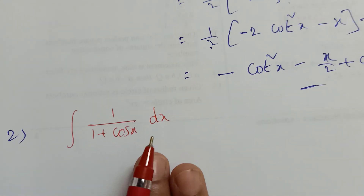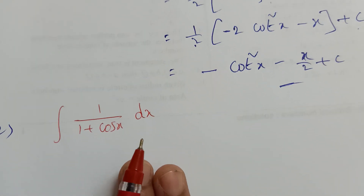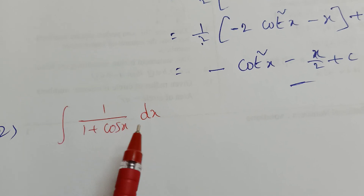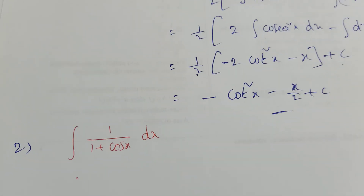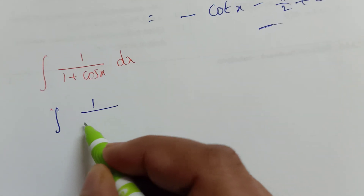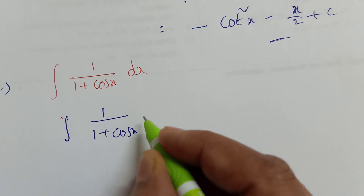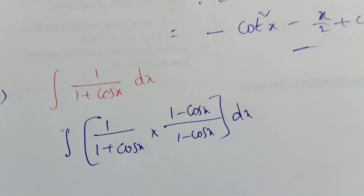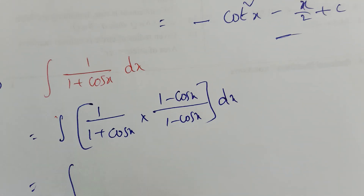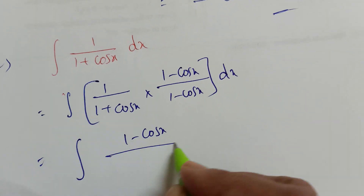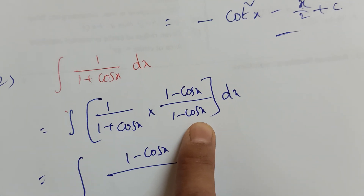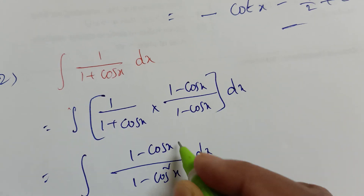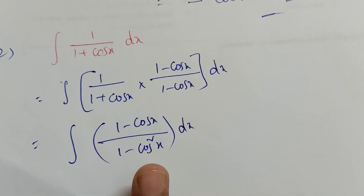Second problem: integration of 1/(1 + cosx) dx. Here only the denominator has 1 + cosx. That's why we rationalize: multiply numerator and denominator by (1 - cosx). This gives integration of (1 - cosx) / [(1 + cosx)(1 - cosx)] dx. Using a² - b², the denominator becomes 1 - cos²x, which equals sin²x.